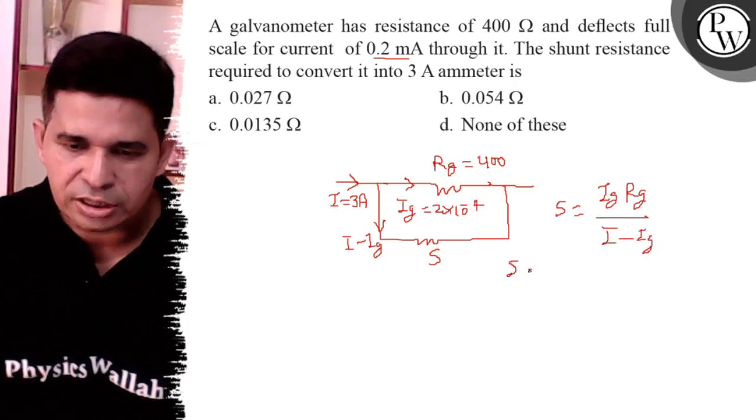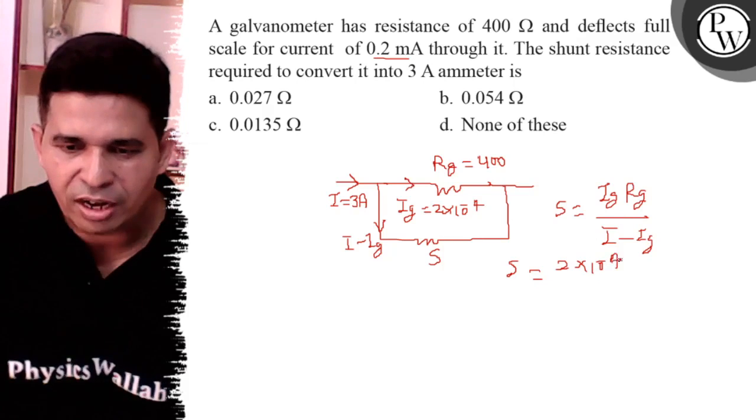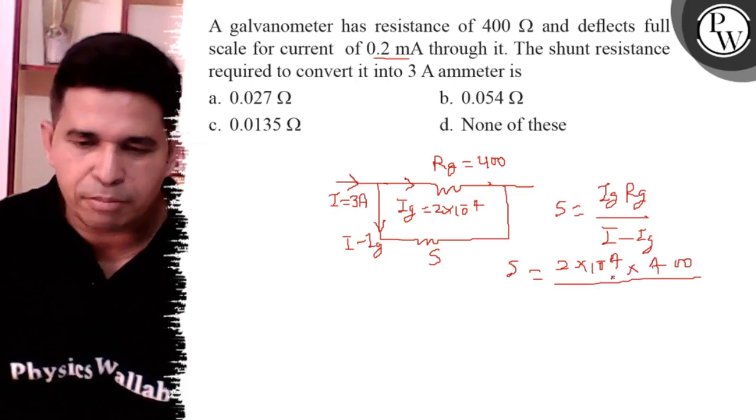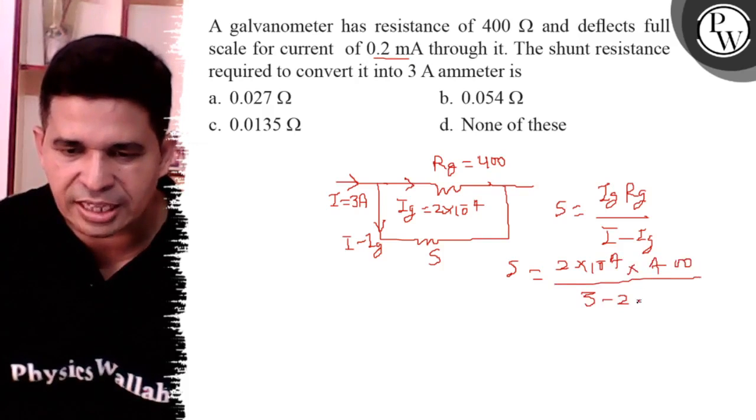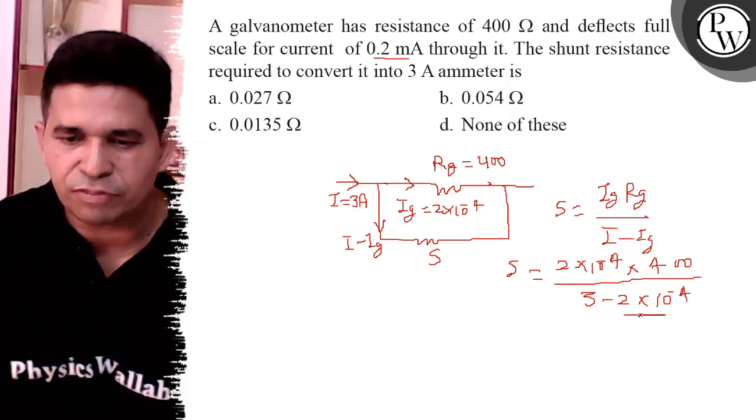Put the values. IG is 2 into 10 to the power minus 4, RG is 400, upon I minus IG. 3 mA, so it is 3 because it is very small value.